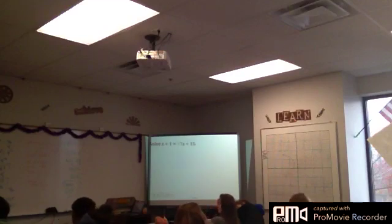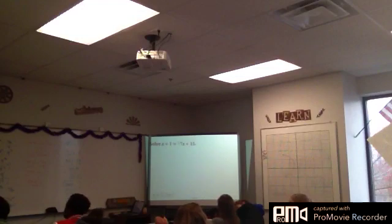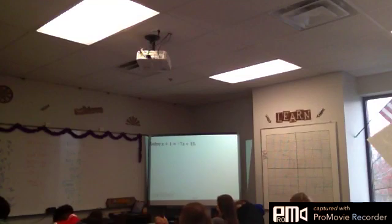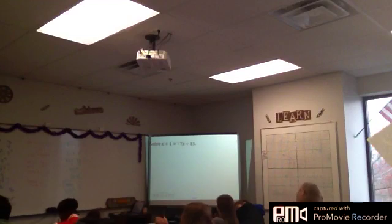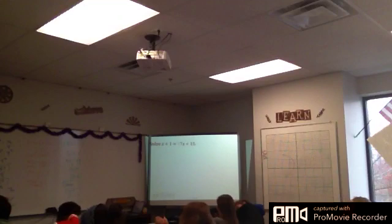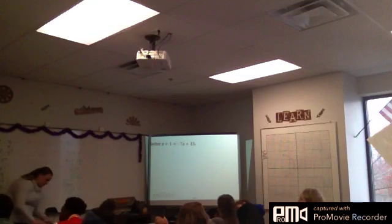Let's try negative 2. Negative 2 plus 1 equals the radical of 7 times negative 2 plus 15. Negative 2 and 1 is negative 1. What's 7 times negative 2 plus 15? I get negative 1 equals radical 1. What's the square root of 1? 1 — so is that correct? No. So negative 2 does not work — this is my only actual solution. It's an extraneous solution, meaning it can't possibly equal that.